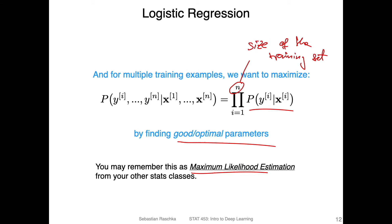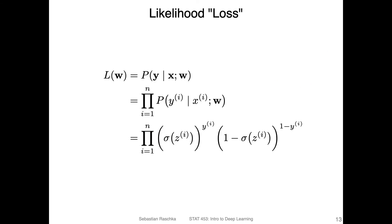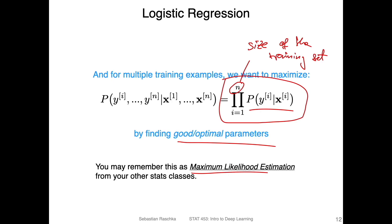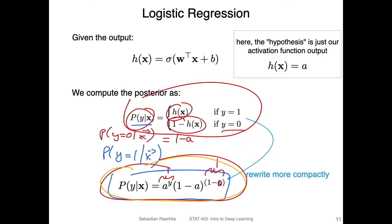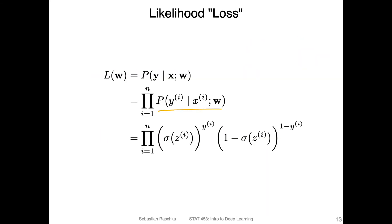Without going into too much detail about maximum likelihood estimation, we want to maximize this term. I'm rewriting it using the compact notation from before — replacing the piecewise function with the single equation, where 'a' is the logistic regression model: sigma applied to the net input z.